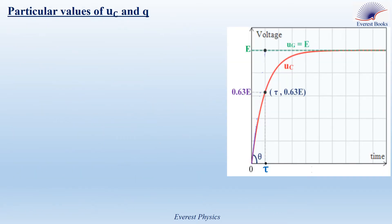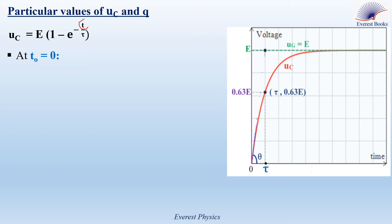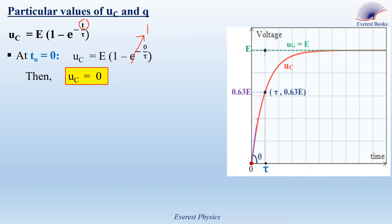Let's determine the expressions of voltage UC and charge Q at the instances 0, tau, and 5 tau. The expression of the voltage is UC equals E times (1 minus e to the power minus T over tau). Starting with time 0: replacing T by 0 gives E times (1 minus e to the power 0). Since e to the power 0 equals 1, UC equals 0. And since Q equals C times UC, if UC equals 0 then Q equals 0. Looking at the graph, at time 0 the voltage across the capacitor equals 0.